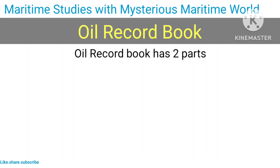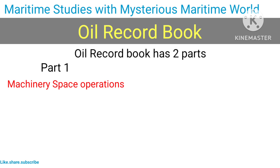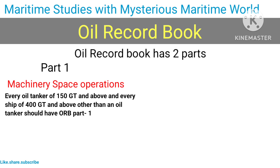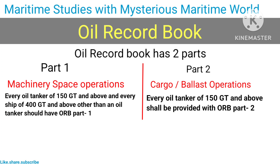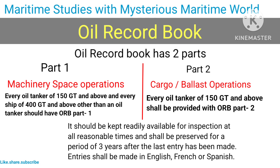The oil record book has two parts. Part 1 covers machinery space operations — every oil tanker of 150 GT and above and every ship of 400 GT and above other than an oil tanker should have ORB Part 1. Part 2 covers cargo and ballast operations — every oil tanker of 150 GT and above shall be provided with ORB Part 2. It should be kept readily available for inspection at all reasonable times and preserved for a period of 3 years after the last entry. Entries shall be made in English, French, or Spanish.